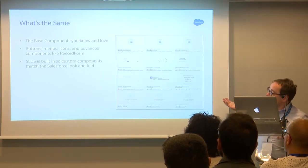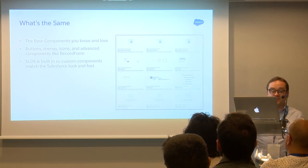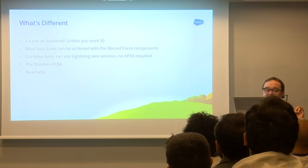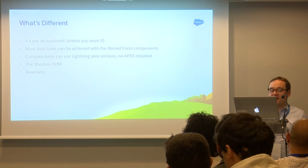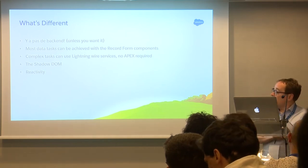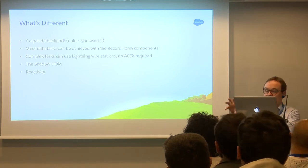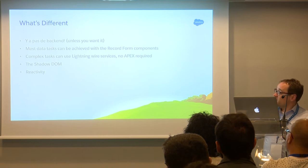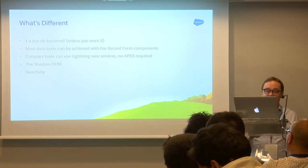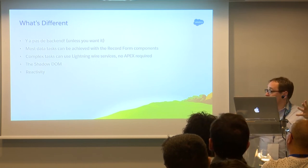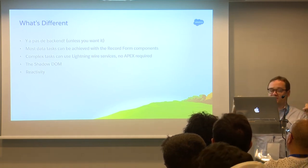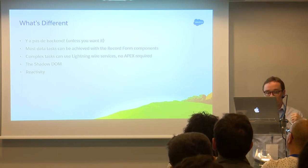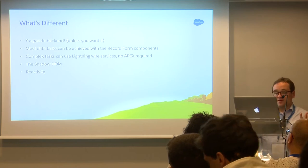So what's the same? The same components — the record form, advanced components, simple components, buttons — everything's there. It has built-in SLDS, so it looks like Salesforce. But what's different? The big one is you have the backend — so you don't need to use Apex anymore for many, many things, and that's really magical. I'll show you a little bit about that. You can use the record form components for most simple data tasks, and complex tasks use wire services. There's also the Shadow DOM — your CSS styles don't penetrate inside of Lightning Web Components. And reactivity, which I'm going to talk about and I think is really important.